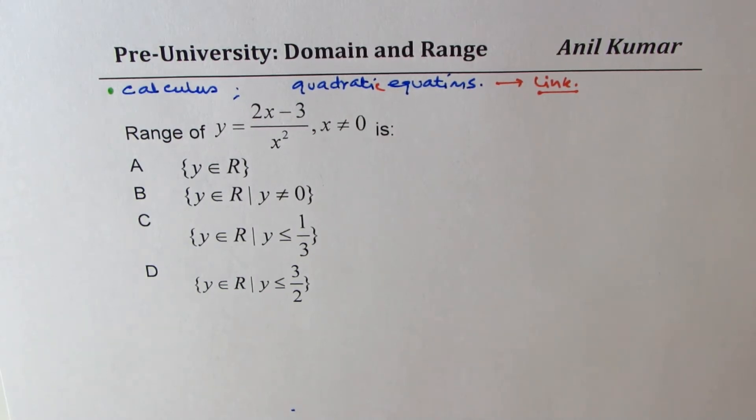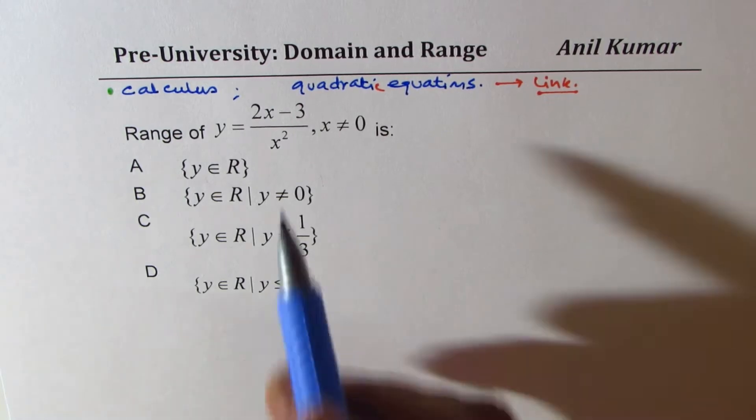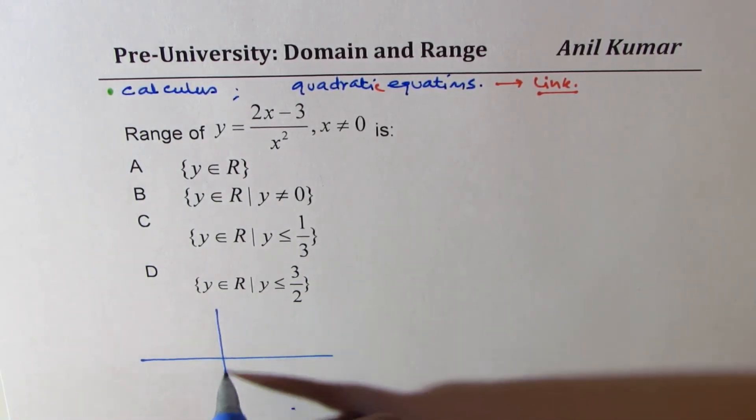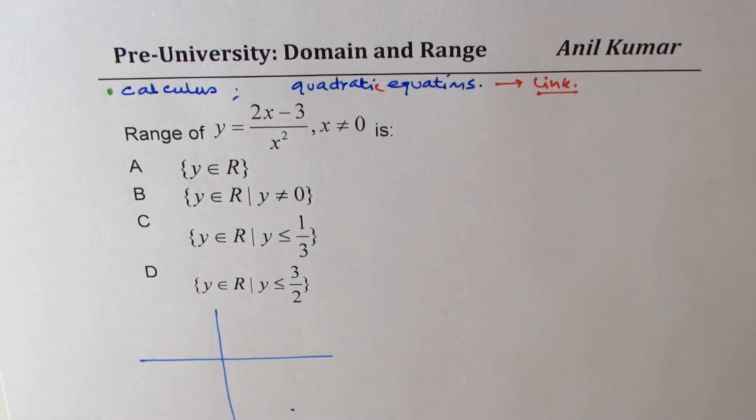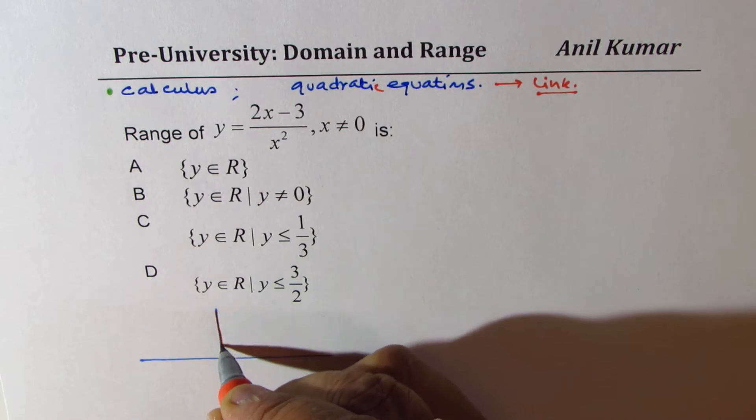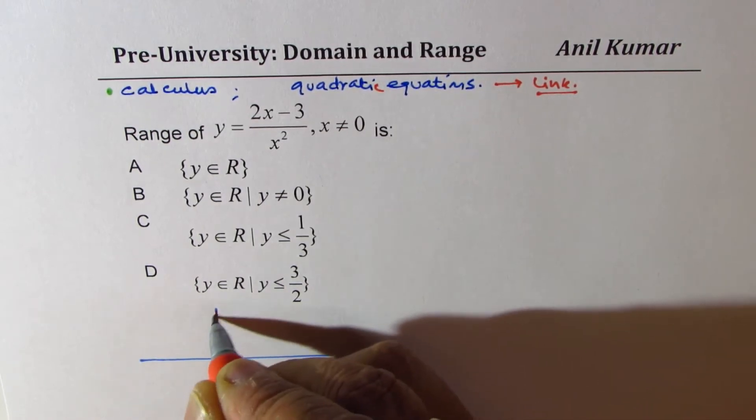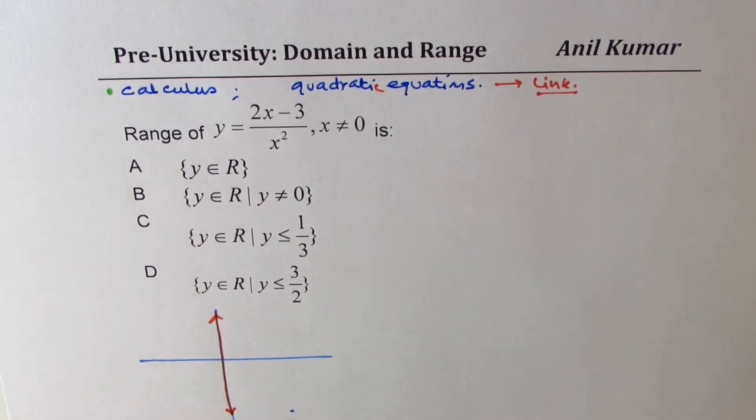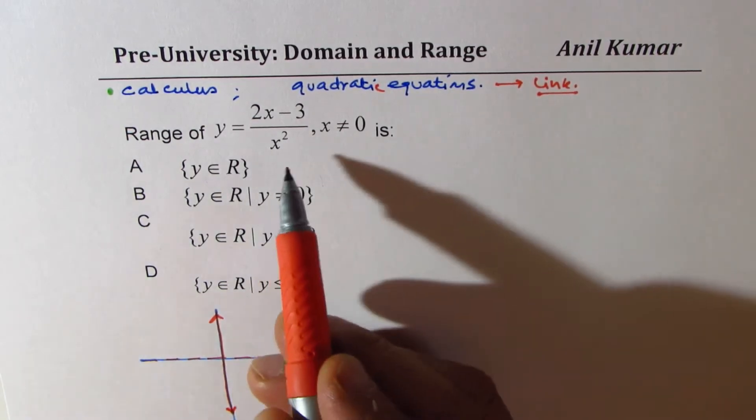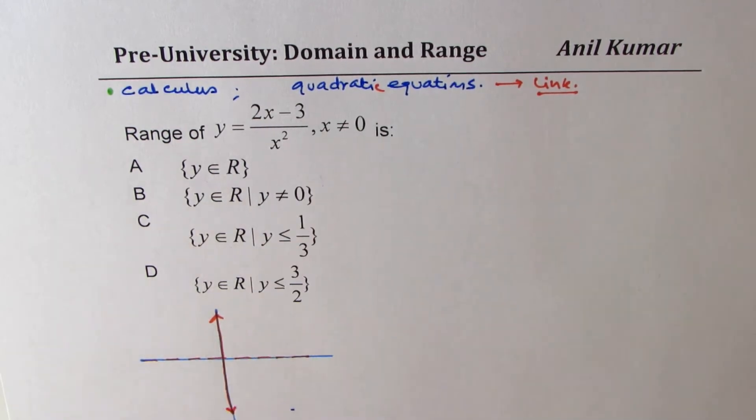Let me remind you about the rational function. This is the rational function. If you want to sketch this function, which could be in itself a good exercise, we have vertical asymptote here at x equals to 0. We also have a horizontal asymptote. Since the denominator degree is higher, we have a horizontal asymptote also.